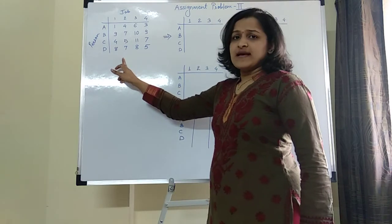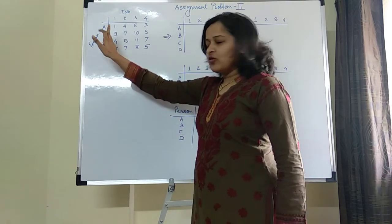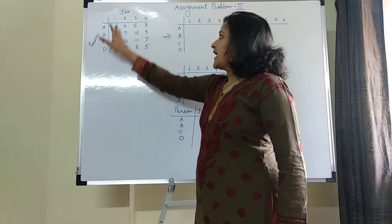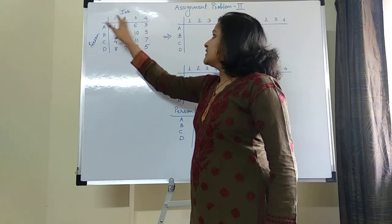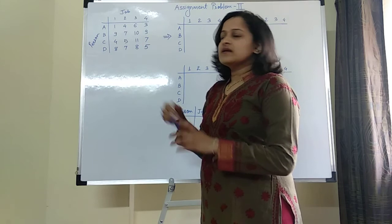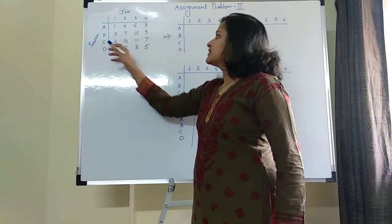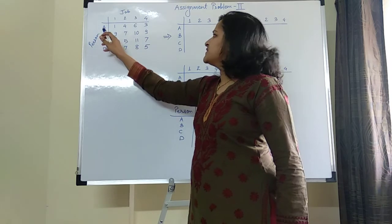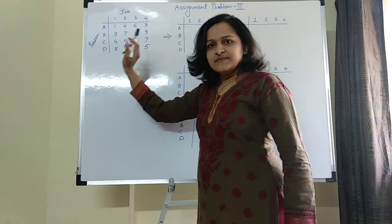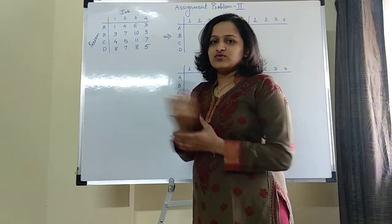This is the example given to you, in which 4 persons are given: A, B, C, D. And 4 jobs are given: 1, 2, 3, 4. These numbers indicate — let's assume those are time in minutes — which means that A can perform job 3 in 6 minutes, C can perform job 2 in 5 minutes, and so on.